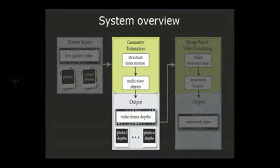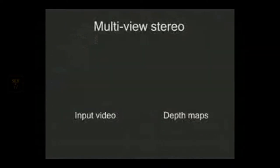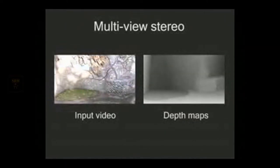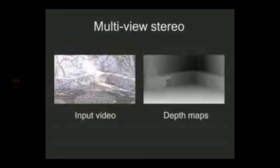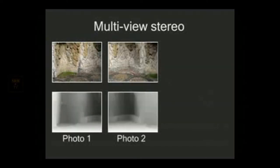The scene geometry is estimated using structure from motion to recover a sparse 3D point cloud of the scene and the relative poses of the video frames and still photographs. We then use a novel multi-view stereo technique to estimate the view-dependent depth maps for each video frame. Depths are also computed for each of the still photographs.